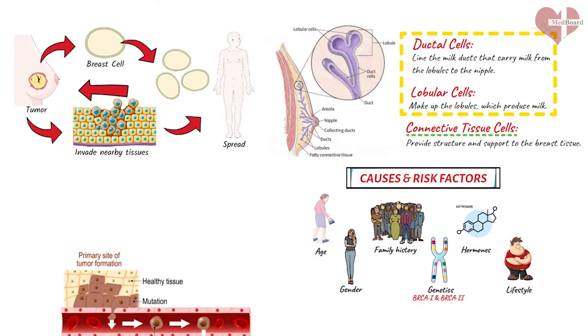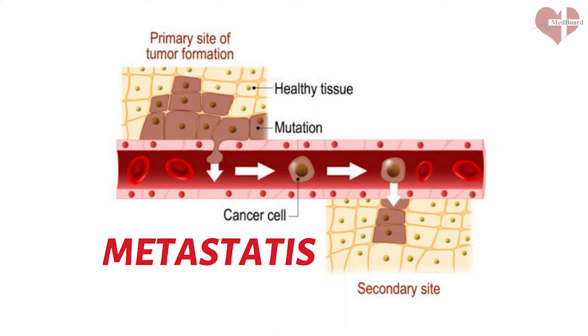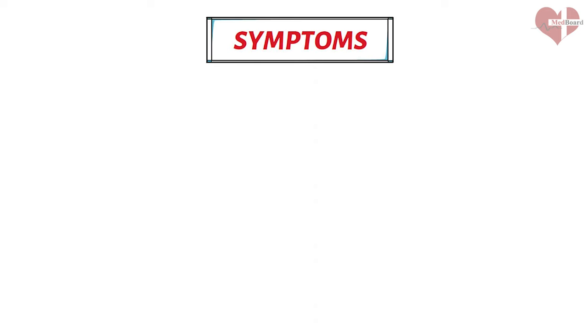Once breast cancer develops, it can spread to nearby lymph nodes or other parts of the body through the bloodstream or lymphatic system. The spread of cancer to other parts of the body is called metastasis and can make treatment more difficult. Breast cancer can often present with a range of symptoms, but it is important to note that not all cases of breast cancer will cause noticeable symptoms. The most common symptom of breast cancer is a lump or mass in the breast tissue.